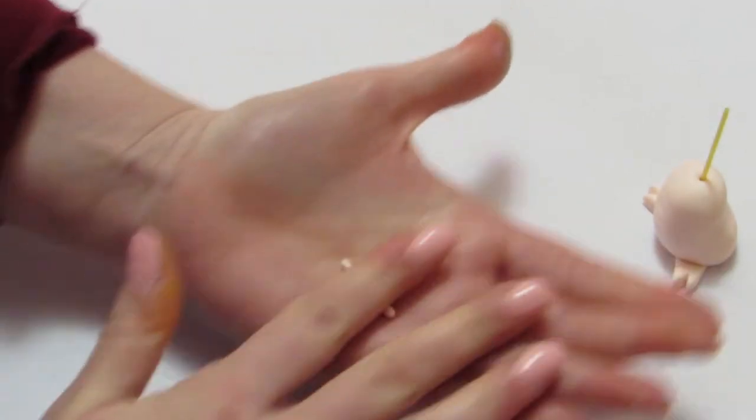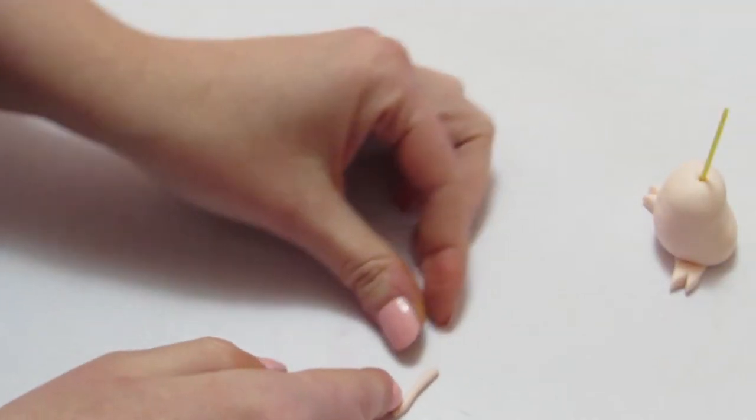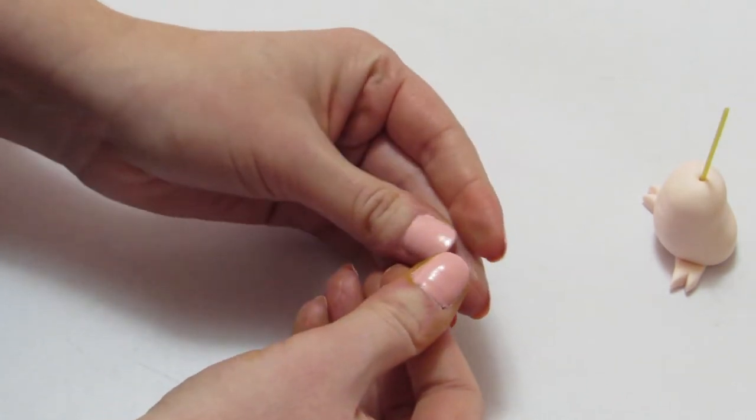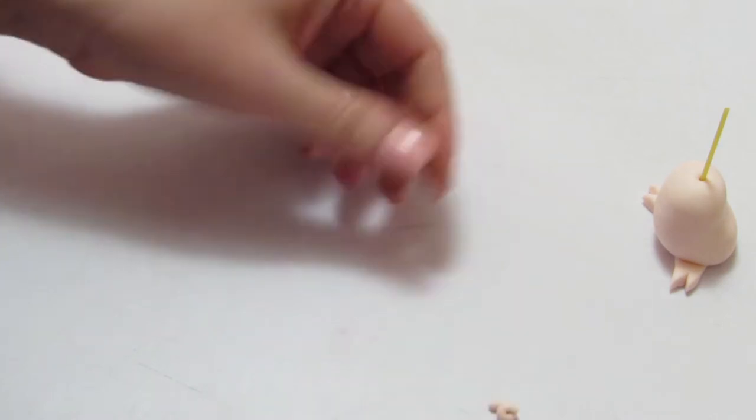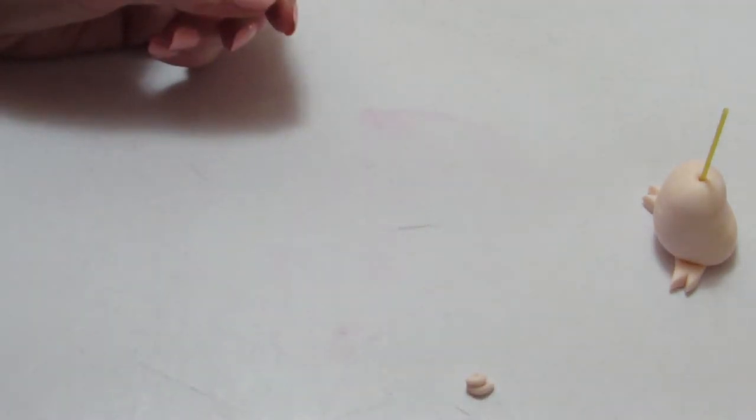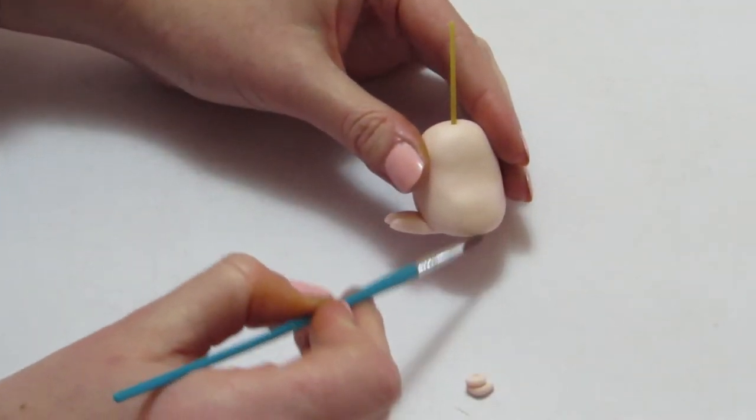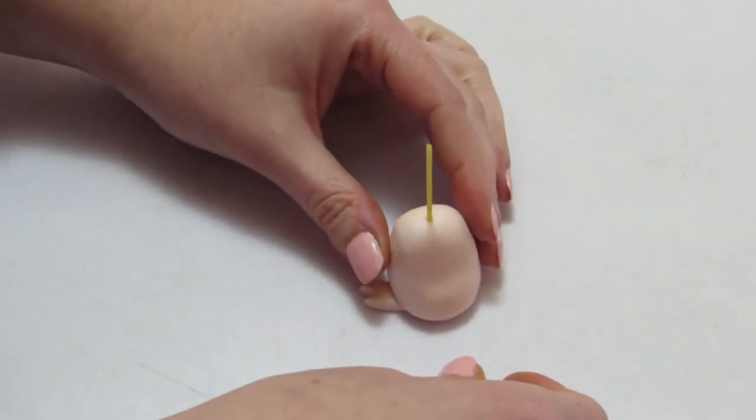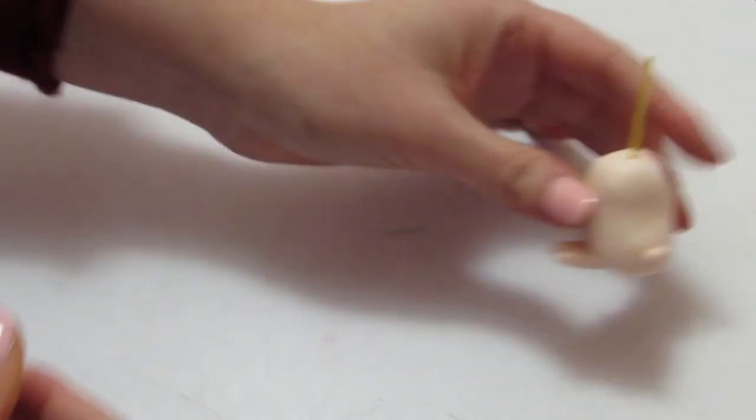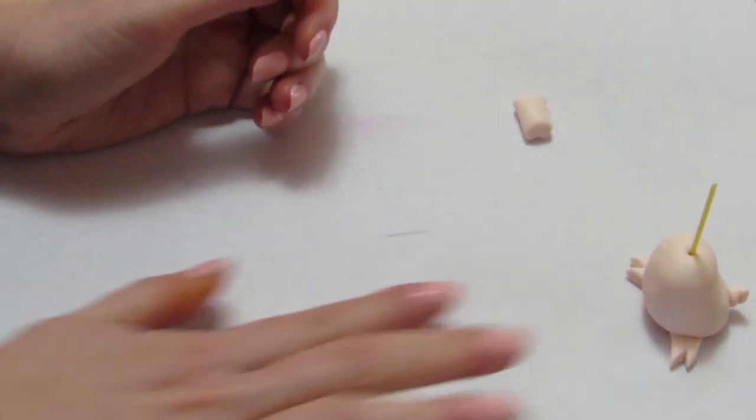To make the tail, you're going to take a little piece and roll it out nice and thin and long, as long as you want, as long as it's not ridiculous. And then just twist it into a coil. And that's his little curled piggy tail. And again, to attach it to the back, a little bit of water on his rump with my paintbrush. Press it into place. And there you go. He's got his tail.